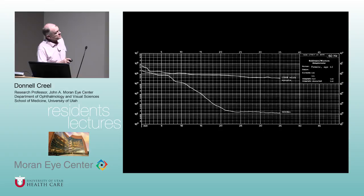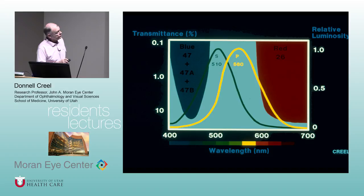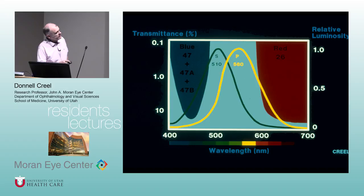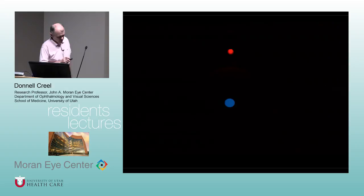Using colors allows isolation of specific photoreceptors. A deep red stimulus isolates cones; a dim deep blue stimulus peaking around 450 nanometers isolates rods. You can therefore measure dark adaptation curves for rods and cones separately using red versus blue targets.